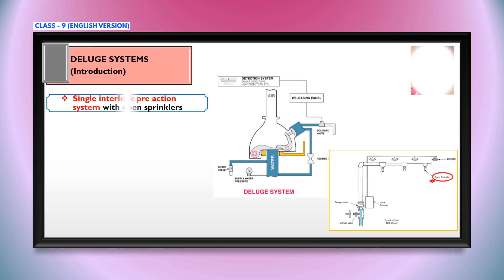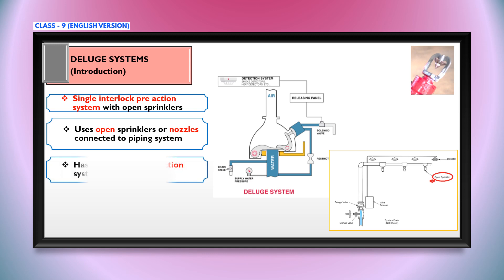Deluge systems are similar to single interlock type pre-action systems. However, the biggest difference is that deluge systems use open sprinklers or nozzles. In this deluge type, open sprinklers or nozzles are connected to the piping network. These systems also have integrated detection systems with a releasing panel similar to the pre-action systems.